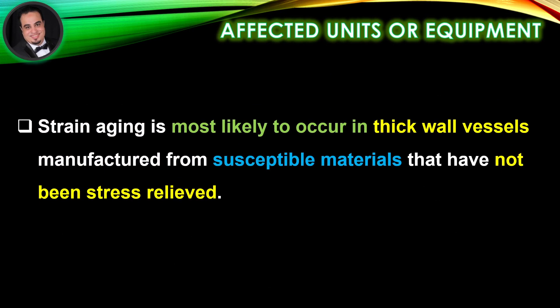Strain aging is most likely to occur in thick wall vessels manufactured from susceptible materials that have not been stress relieved.